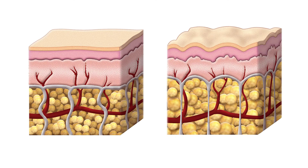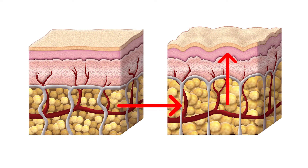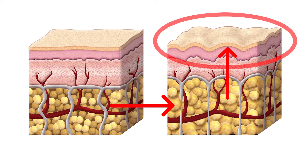Our fat cell volume — the fluid inside the fat cell — begins to expand and then presses up against the skin. It does so in a very specific way, and as it presses up against the skin, we see that dimpling.